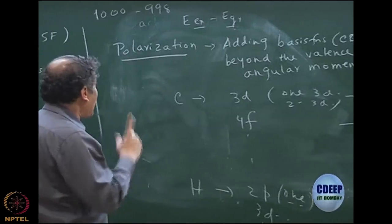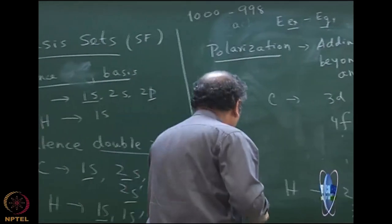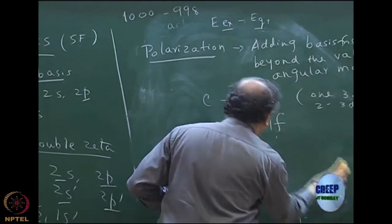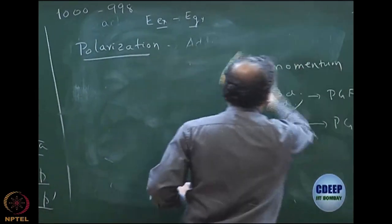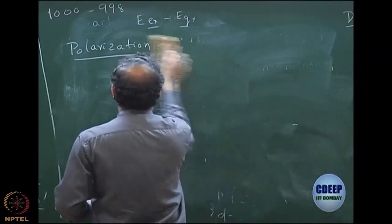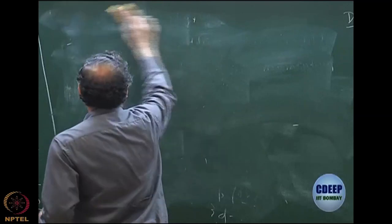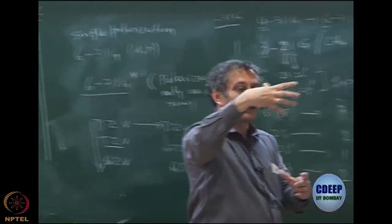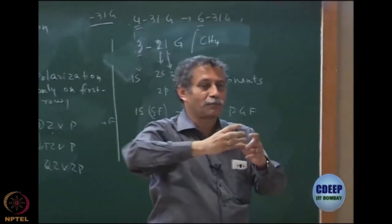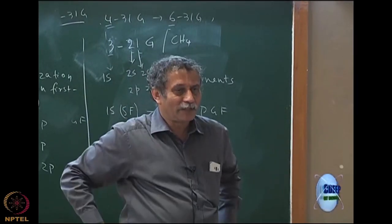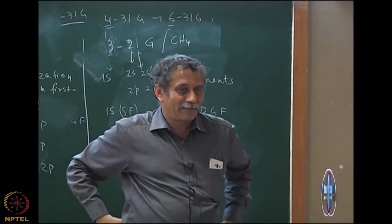The second type that is also very important — apart from polarization — is the following. Polarization essentially means you are going beyond one angular momentum, and it polarizes the electron density. That is how the word polarization came about.